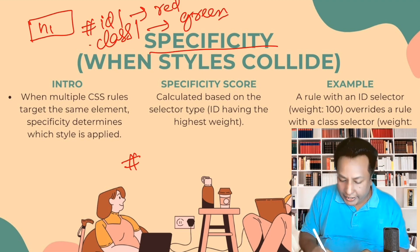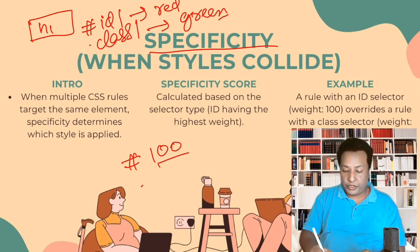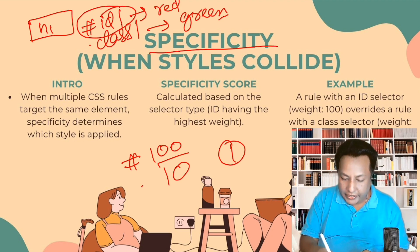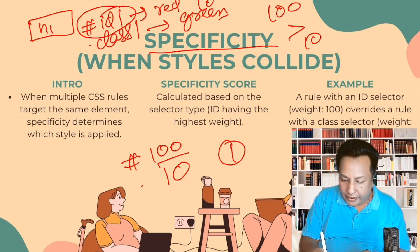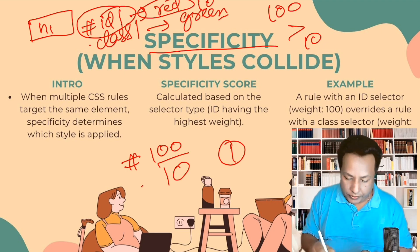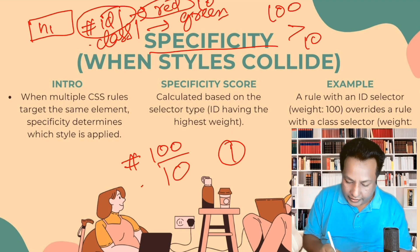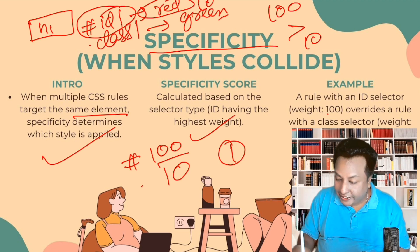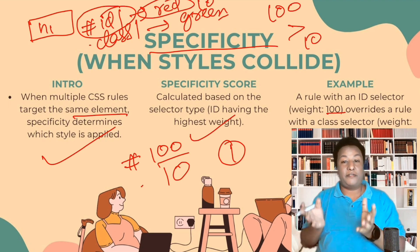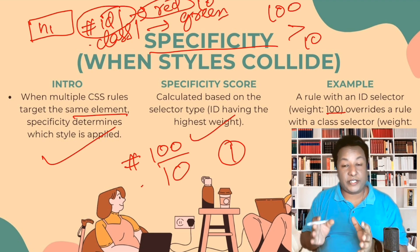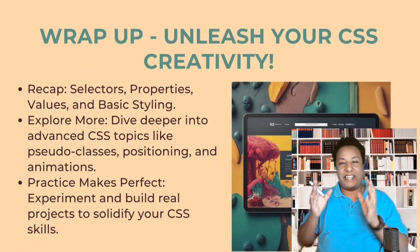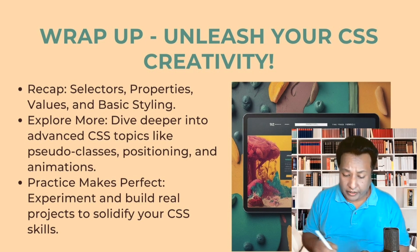The rule is that id always has more value. We calculate specificity as numbers: id has a value of 100, class has a value of 10, and an element selector has a value of 1. So id at 100 is greater than class at 10, meaning the color red will be applied because id is more powerful than class. When multiple CSS rules target the same element, specificity determines which style is applied by calculating these scores.